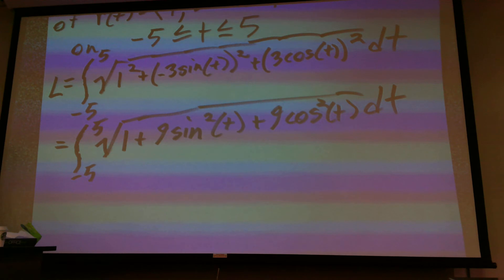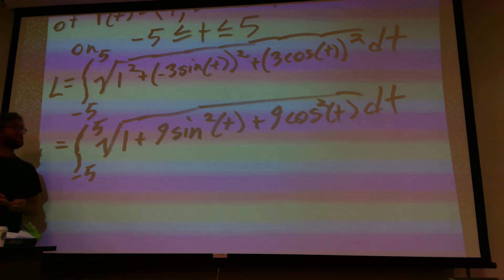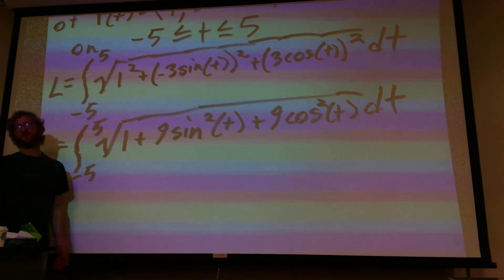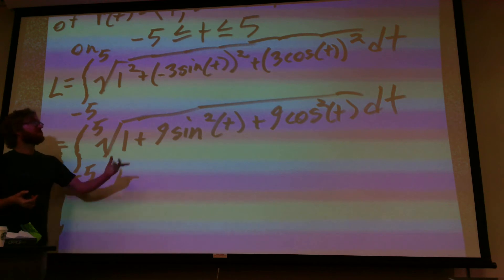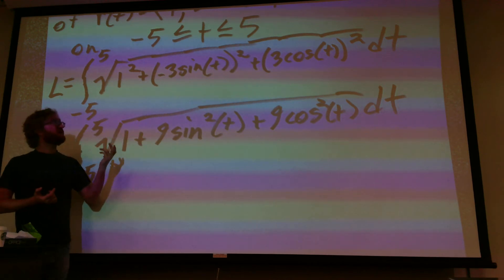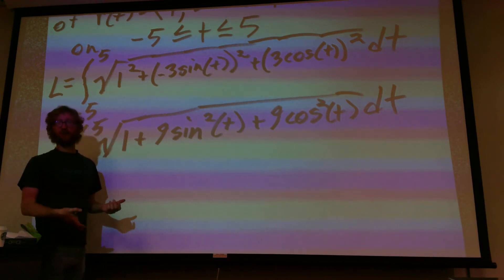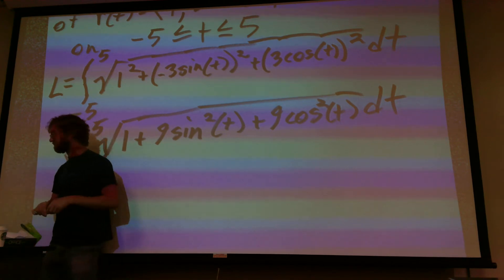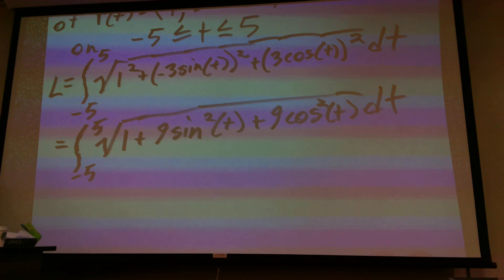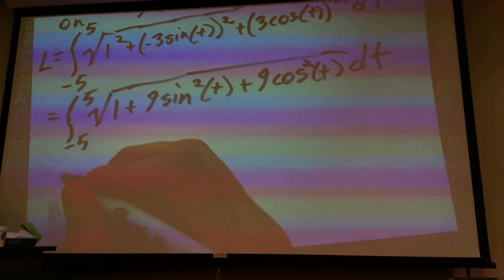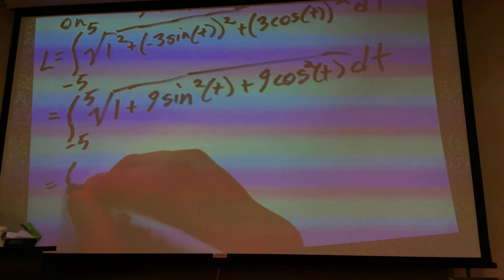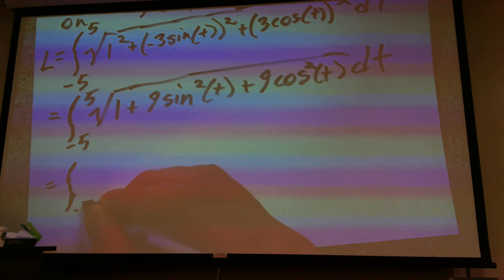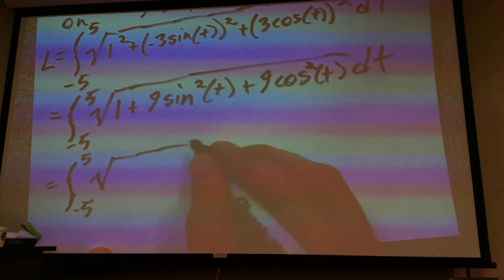Okay. And now, if we remember our rules from trigonometry, sine squared plus cosine squared equals one. So I can pull a nine out of this. It would be nine times sine squared plus cosine squared. So, nine times one. So this would be the integral from negative five to five of the square root of one plus nine.